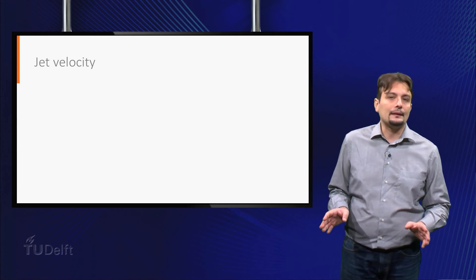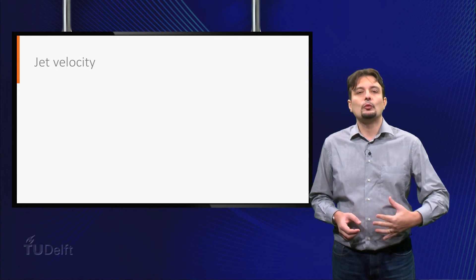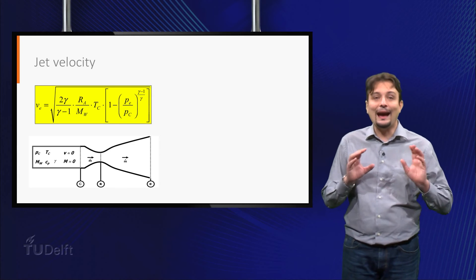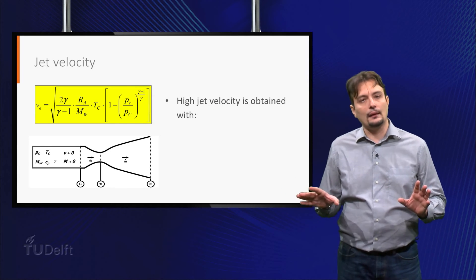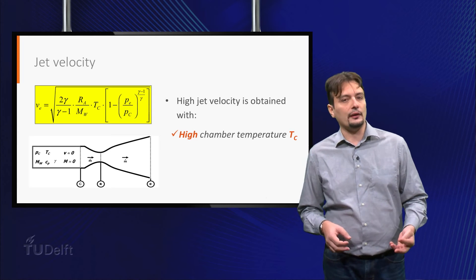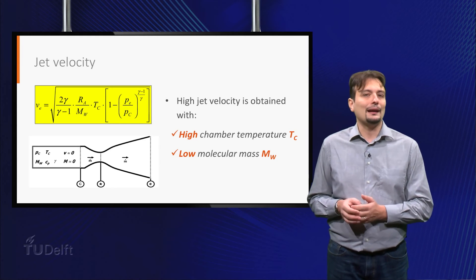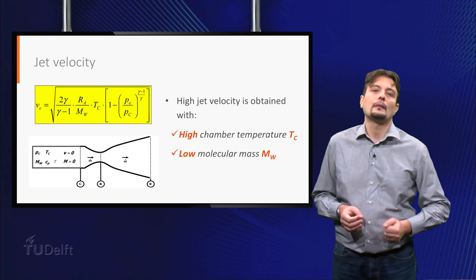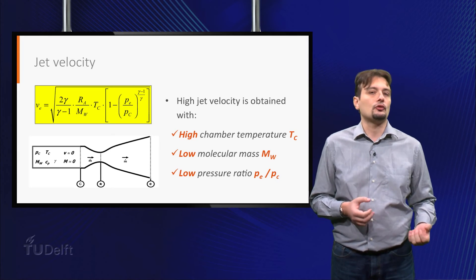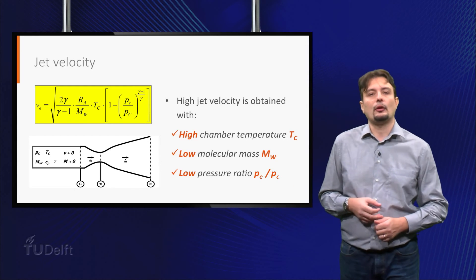We are now ready to discuss the equations for the three flow parameters that were our initial objective for this video. We start with the jet velocity, which can be calculated by means of this equation. A high jet velocity, desirable for better performance of the system, can be achieved in different ways. High chamber temperature is beneficial for the jet velocity, as well as low molecular mass. This is quite obvious, considering that lighter molecules are easier to accelerate to high speeds. A higher jet velocity is also obtained with a low ratio of the nozzle exit pressure to combustion chamber pressure, or when the flow is expanded more starting from the same chamber pressure.